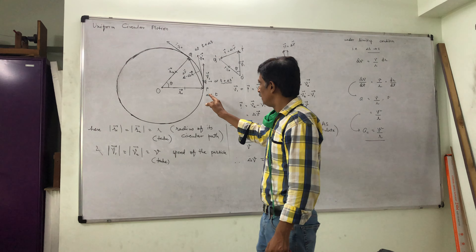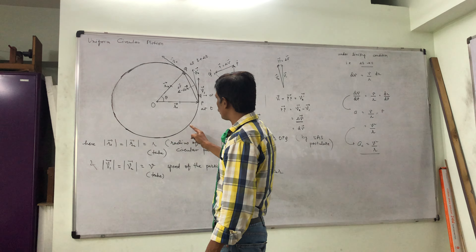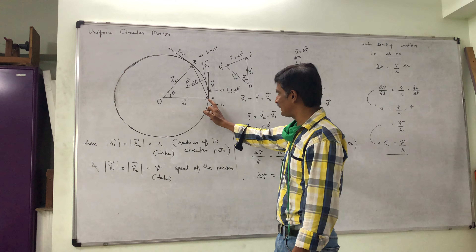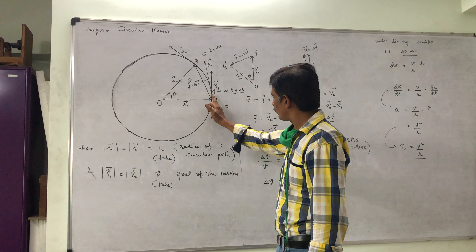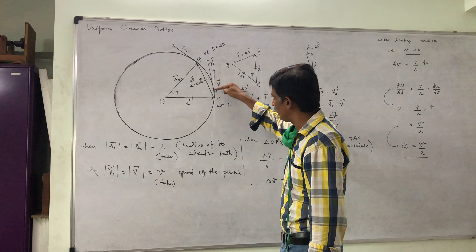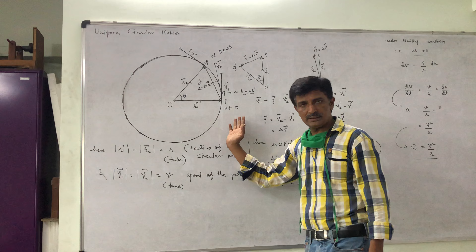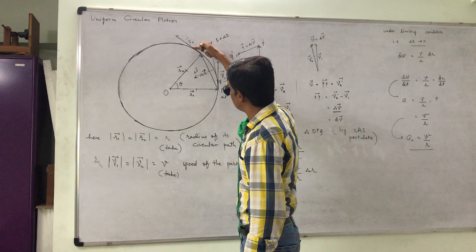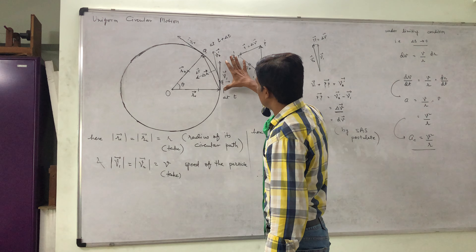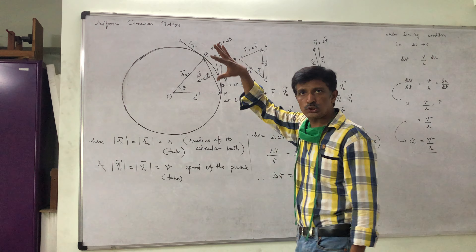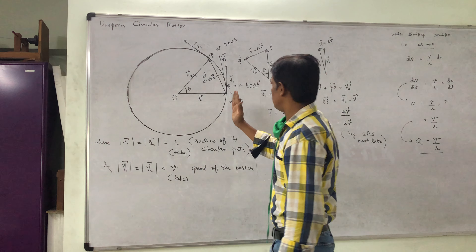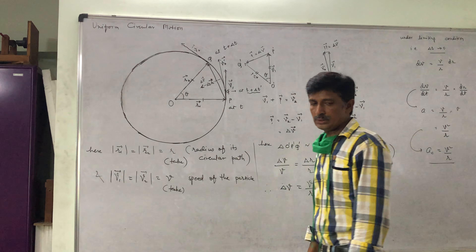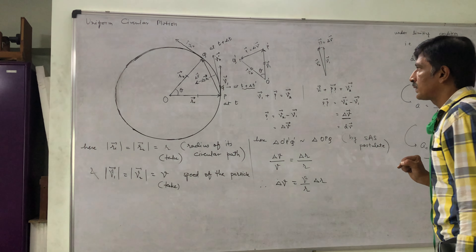See the figure. A particle is performing uniform circular motion on this circular path of radius r. At a certain instant it is at point P, so velocity is in the direction of the tangent — this one is velocity v1. After a short while it reaches point Q, and at that moment the velocity is in this direction. These two vectors have the same length because speed is constant. But at time t the velocity is in this direction, and at time t plus delta t it is in this direction. So direction changes.